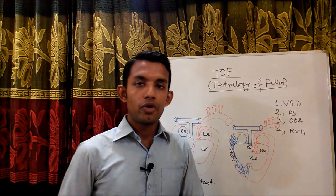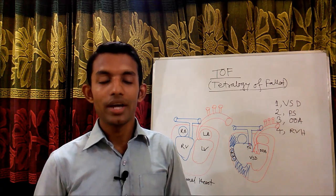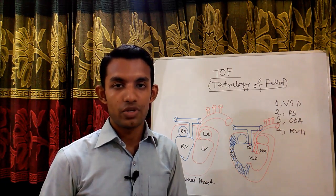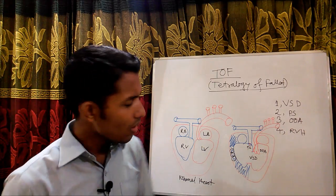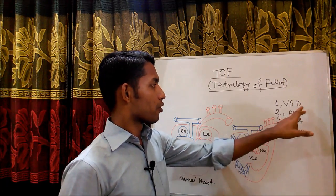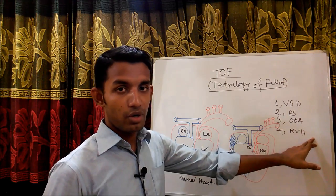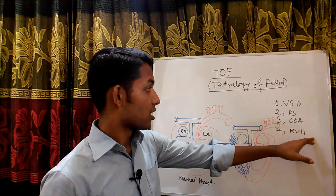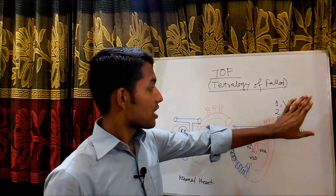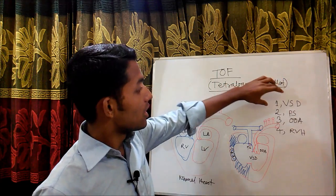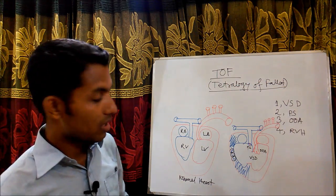In Tetralogy of Fallot, if we auscultate, we get a loud ejection systolic murmur. Why do we get a loud ejection systolic murmur in Tetralogy of Fallot? There are four parts: VSD, pulmonary stenosis, overriding of aorta, and right ventricular hypertrophy. But among these four components, only VSD and pulmonary stenosis are important for generating any murmur.